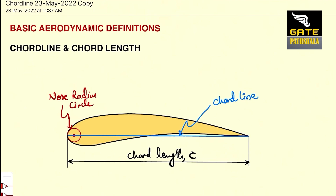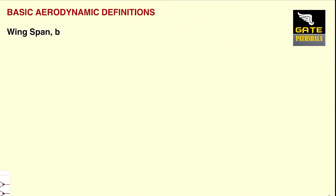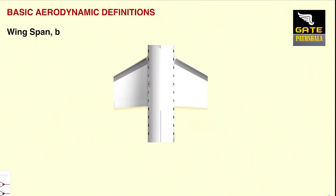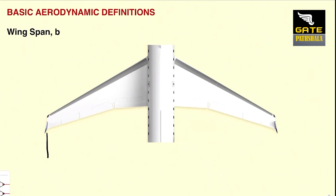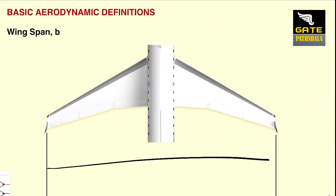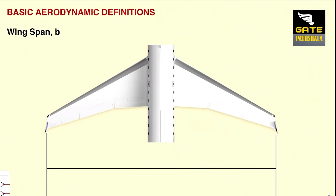Now we know exactly what is a chord line. So, let us study what is a wingspan. It is denoted by a letter B. To do that, let us consider a wing like this. Wingspan is defined as the distance between one tip to the other tip. The tip-to-tip distance is what is called the wingspan, and it is denoted with a symbol B.